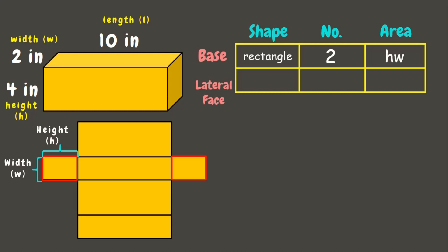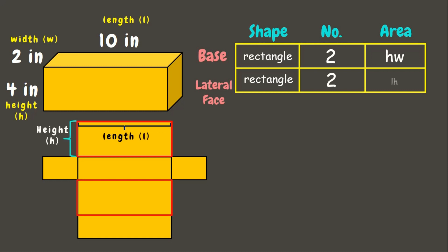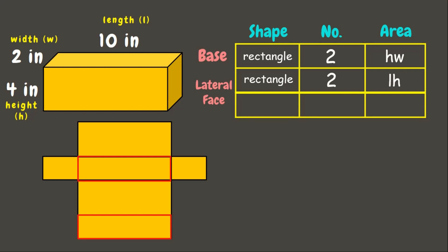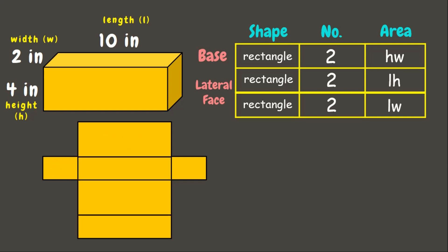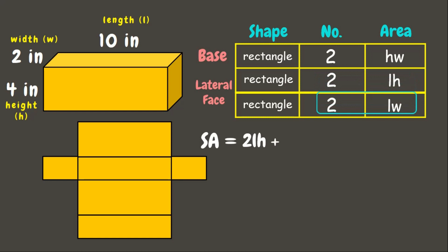Next, let's look at the lateral faces. We can see that we have two different pairs of lateral faces. First, we have two rectangles, and to get the area of each rectangle we multiply the length and the width. To get the surface area of a solid figure, we add the areas of the lateral faces and the areas of the bases. The lateral face areas are 2 × length × height plus 2 × length × width.